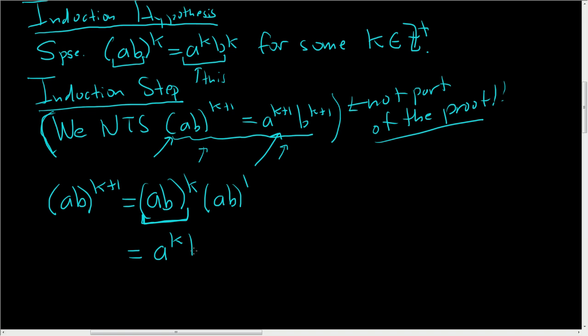So we get a to the k, b to the k, times ab. Multiplication of real numbers is commutative, so we end up with a to the k plus 1, b to the k plus 1.